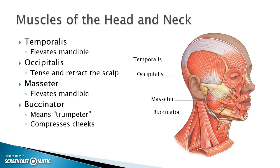The last muscle in this picture is the buccinator, going from the corner of the mouth back toward the jaw. The word buccinator actually means trumpeter, so it compresses the cheeks. If you think about playing a trumpet — if done poorly, the cheeks puff out like a chipmunk — but when done correctly, the buccinator compresses the cheeks and forces air out through the mouth.